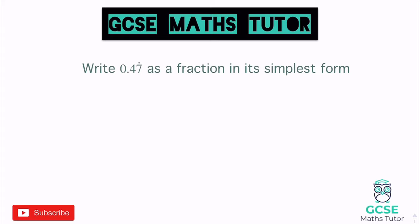When it comes to this we are going to use a bit of algebra. The first thing we're always going to do is write x equals the decimal in the question: 0.47 with the recurring dot. It's important to think about what's actually recurring here, and it's just the 7. If I was to write it out as an actual decimal it would be 0.4 and I could just keep writing 7s forever.